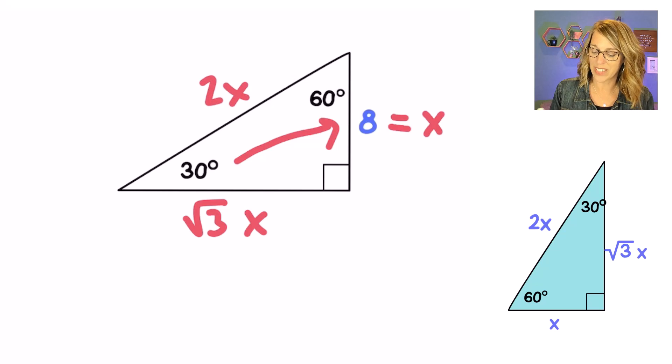My hypotenuse using that template is going to be 2x. Well I know what x is equal to so I can go ahead and put in each of my values. Let me erase the x's that I've got and I'm going to replace each of those x's with an 8.